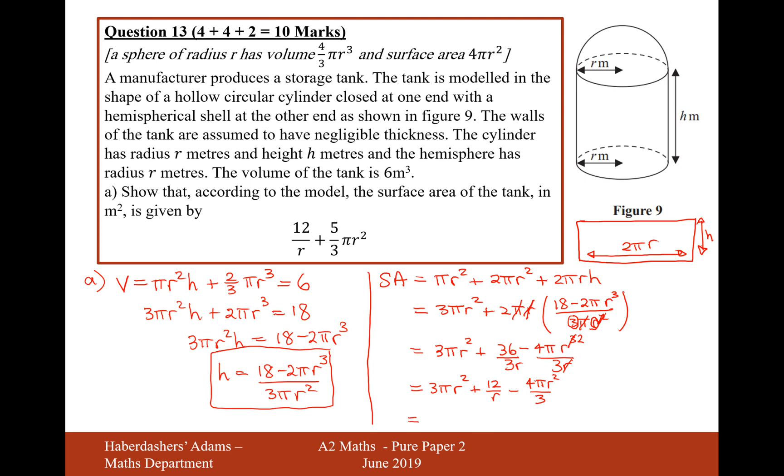And now that we've got a pi r squared here and a pi r squared here, we can simplify this. It's going to be 3 minus 4 over 3, so that'll be 9 over 3 minus 4 over 3, which will be 5 over 3. So it'll be 5 over 3 pi r squared plus 12 over r, which is exactly what we're looking to show it's equal to. There we are, that's how we do part A.